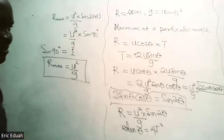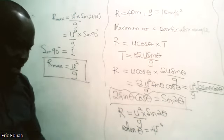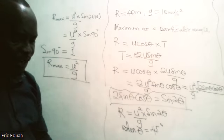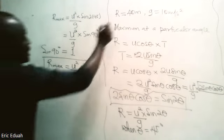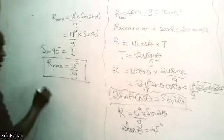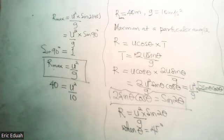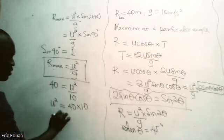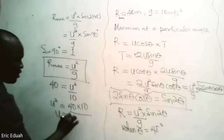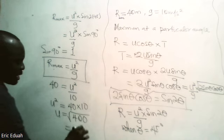The question requires us to find the horizontal speed of projection. A projectile has a maximum range of 40 meters. We are given g, so 40 equals u squared over 10. Making u the subject: u squared equals 40 times 10, so u equals the square root of 400, which equals 20 meters per second.